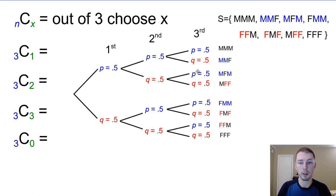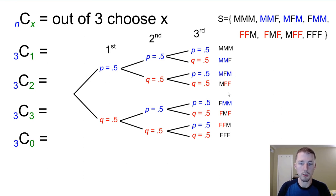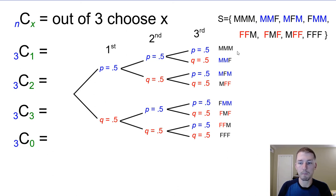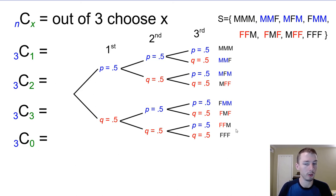We can map out all three events — each child can be male or female — and list all eight possible combinations. Since probabilities are all equal, each is equally likely to occur. But there are three different combinations of choosing one and choosing two, while choosing three and choosing zero each have only one combination. Choosing two out of three is the same as not choosing one — so those are symmetric, which is kind of cool.